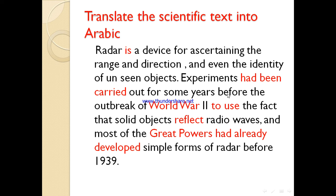بعد ما أطلع معناه من القاموس، 'for some years before the outbreak of World War Second' — هنا 'World War' proper names، تلاحظ أن كل كلمة بادية بحرف كبير، فمعناه أن هذا اسم مهم يجب الانتباه له بالترجمة، اللي هي الحرب العالمية الثانية. 'to use' هنا عندنا جملة بها فعل، فلازم أبدأ بترجمة الفعل قبل الكلمات التي تسبقه. كذلك 'solid objects reflects radio' — عندي فعل 'reflects'، ما أجي أقول 'الأجسام الصلبة تعكس'، لازم أقول 'تعكس الأجسام الصلبة' — أبدأ بالفعل لأن اللغة العربية تبدأ بالفعل قبل الاسم. 'great powers' أيضاً كلمات بادية بحرف كبير، إذن هي proper names — الدول العظمى.